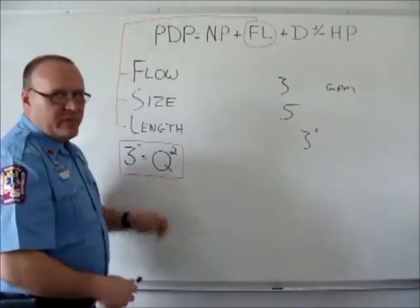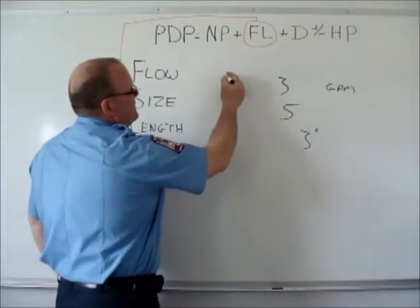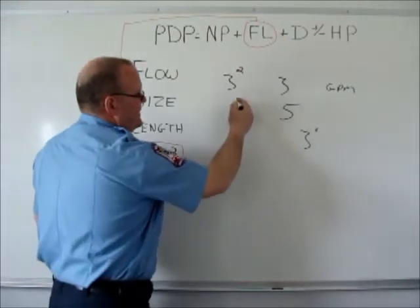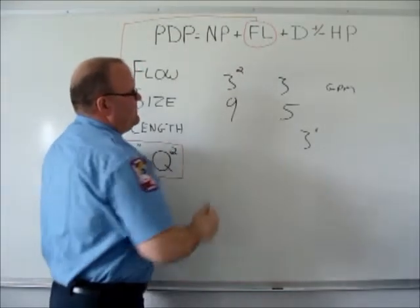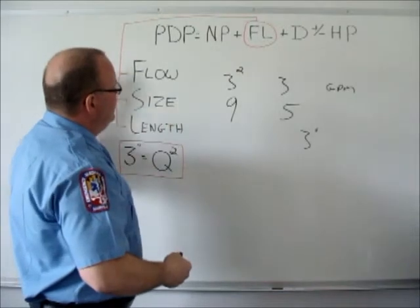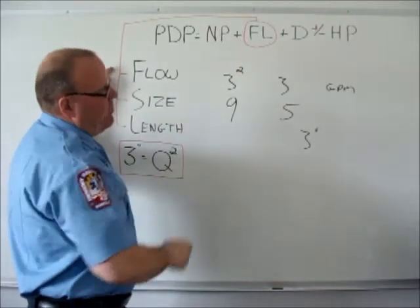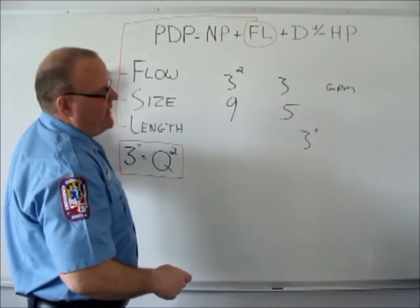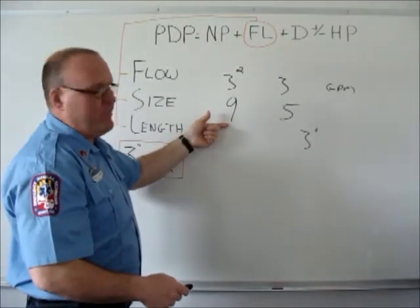That essentially becomes the Q. So the three squared, or three times three, would end up being nine, and that would tell us that as driver operators for every 100 foot section of three inch hose flowing 300 gallons a minute, there would be approximately nine pounds of friction loss.